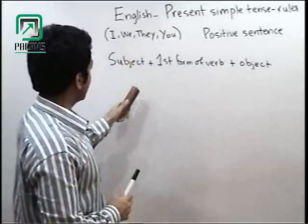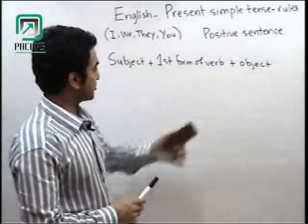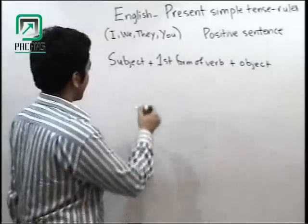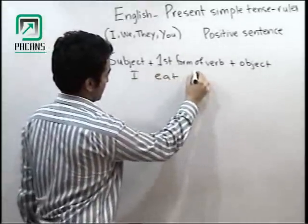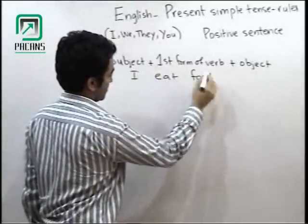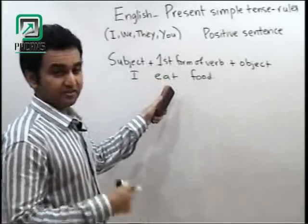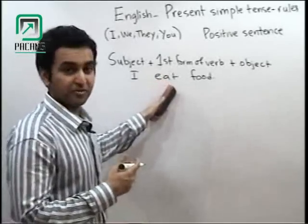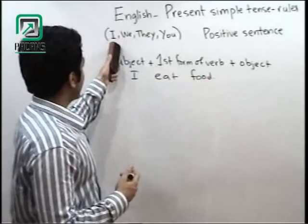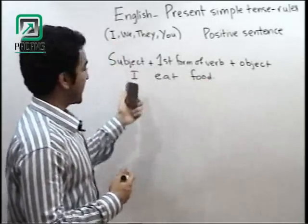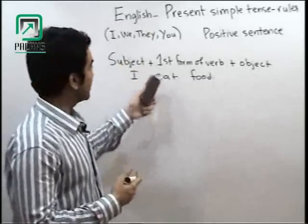This sequence: subject, first form of verb plus object. I eat food. I is the subject, eat is the first form of verb (second form ate, third form eaten), object is food. I eat food, we eat food, they eat food, you eat food.